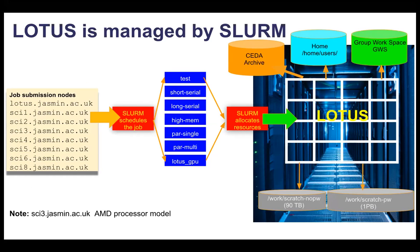The migration to the new system was done gradually and now the whole of Lotus is managed by SLURM. This diagram shows the queues and workflow: SLURM schedules jobs to a specific queue, jobs wait according to the priority of the queue and the job itself, then SLURM cycles through compute nodes to find which are available and have the required resources, and the job gets allocated resources and starts running.